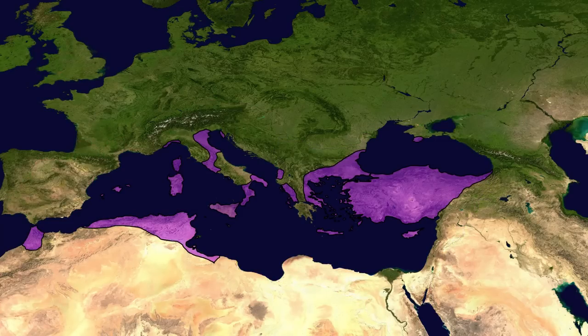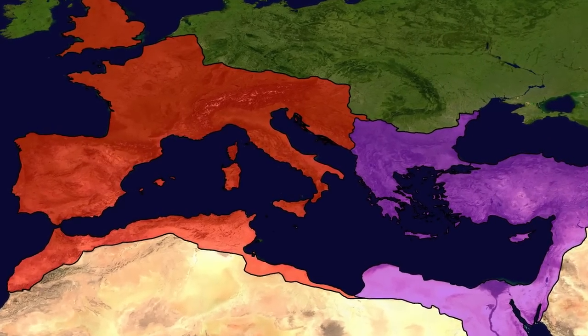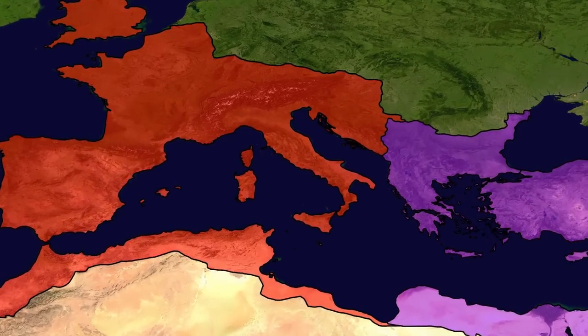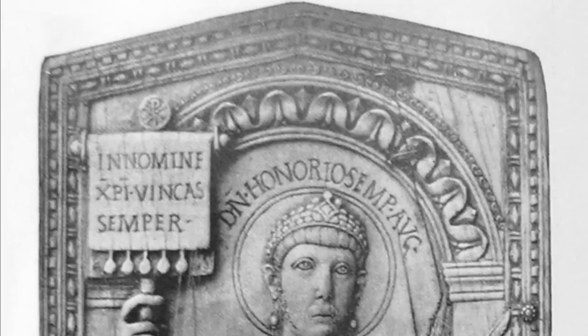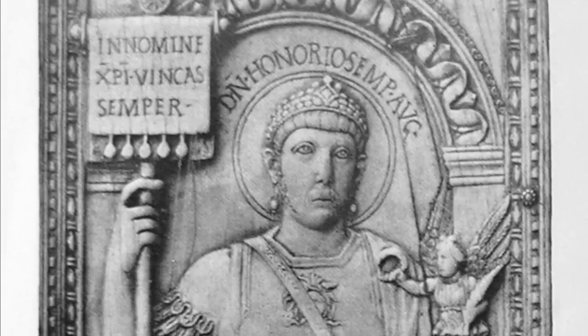The Eastern Empire fared somewhat better, but by the middle of the 7th century it had also lost two-thirds of its territories. So the question we can ask is: why did the Western Empire fall? What were the reasons behind the collapse of such a mighty empire? Were outside factors more important, like the famous barbarian invasions, or was it the internal decay of the empire that led to its collapse?